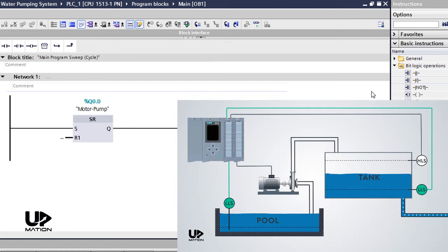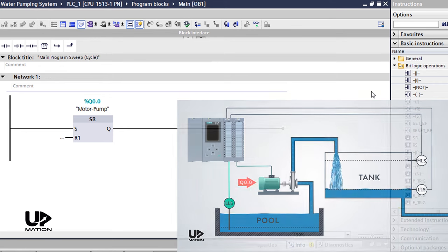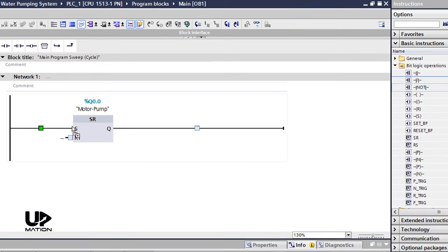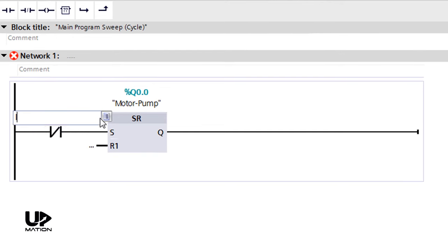The only condition required for starting the pump is losing the I0.1, that is the tank's low-level switch. So I connect a close contact to the set input of the flip-flop and will type I0.1 here and press Enter. This way, when the I0.1 is false, then the set input of the flip-flop would be 1 or true, and consequently the pump will turn on.